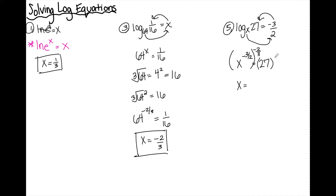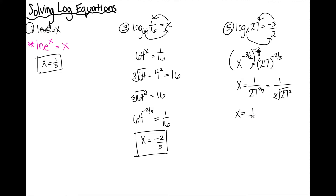Whatever I do to the left, I also do to the right, so I raise the right side to the negative two-thirds as well. To evaluate something with a negative exponent, I put it in the denominator with a positive exponent: one over 27 to the positive two-thirds. I rewrite this as the cube root of 27 squared. I start with the root first — the cube root of 27 is 3, and 3 squared gives me 9. So x equals one over nine.